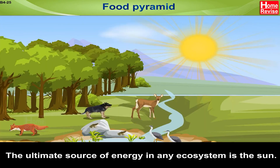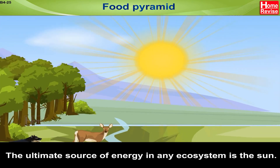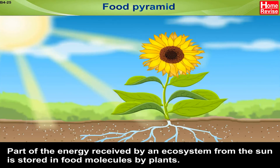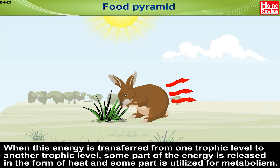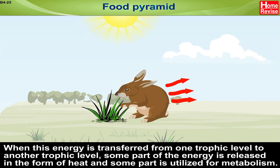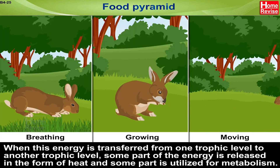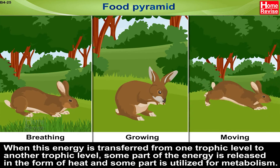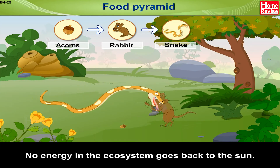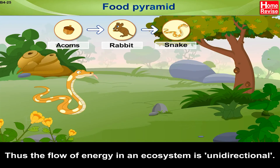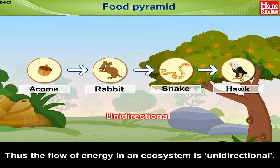The ultimate source of energy in an ecosystem is the sun. Part of the energy received by an ecosystem from the sun is stored in food molecules by plants. When energy is transferred from one trophic level to another, some part is released as heat and some is utilized for metabolism. No energy in the ecosystem goes back to the sun. Thus, the flow of energy in an ecosystem is unidirectional.